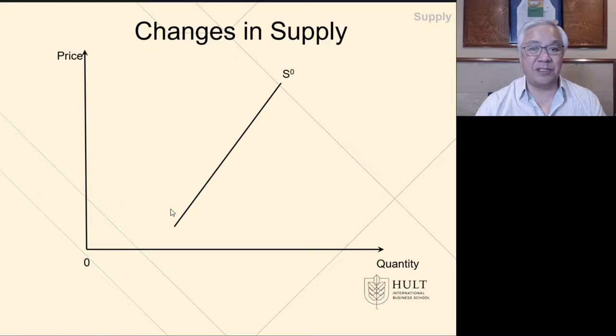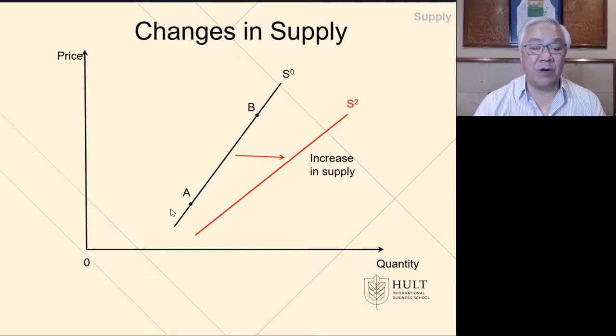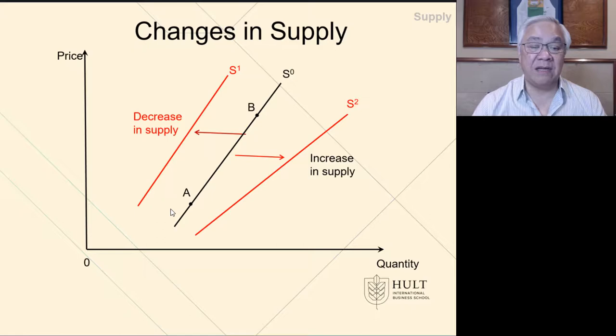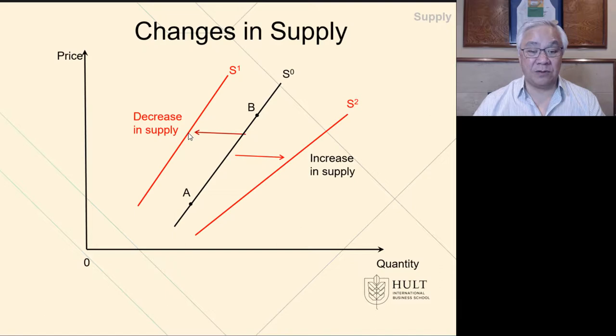Changes in supply, similar to changes in demand, can occur. We see points A and B: the higher the price, the more producers will supply. But there could be an increase in supply, where at the same price the amount producers are willing to supply goes up. Or it goes the other way — a decrease in supply — where at a given price, say at B, producers used to want to produce at a certain level of Q, but because of the shift in supply, the quantity drops. A decrease in supply leads to a reduction of quantities or raising prices, and an increase in supply increases the quantity sold or drops the price.